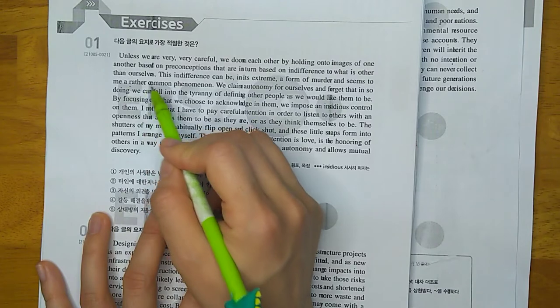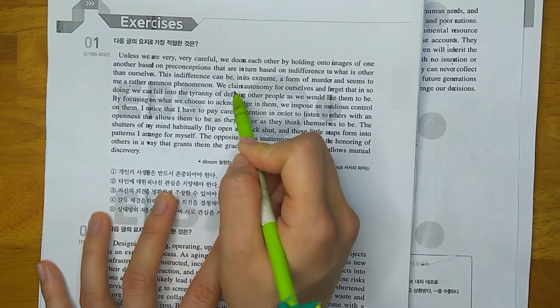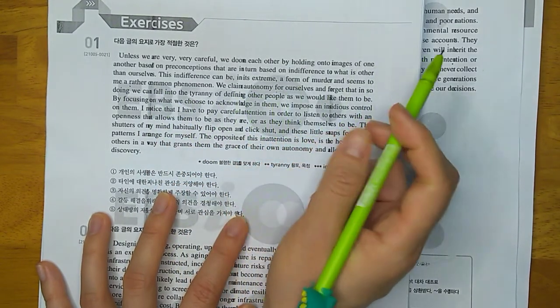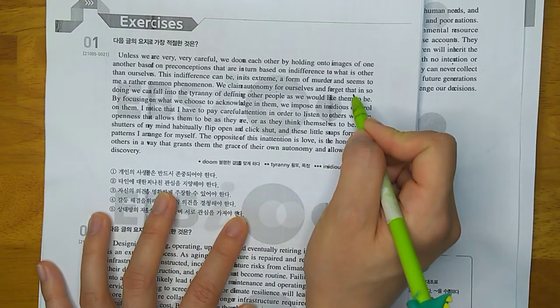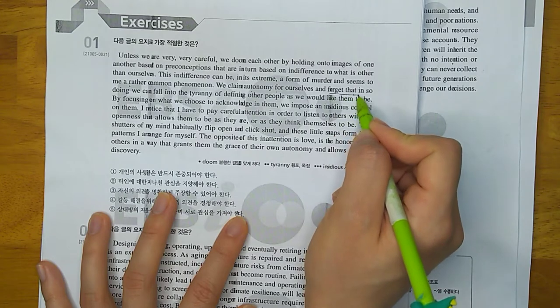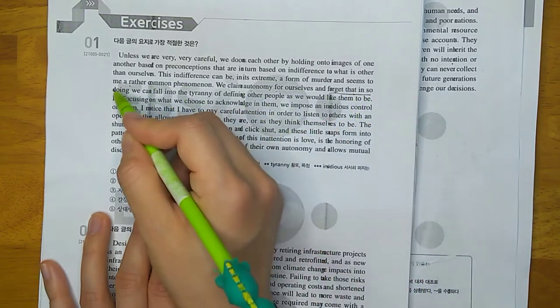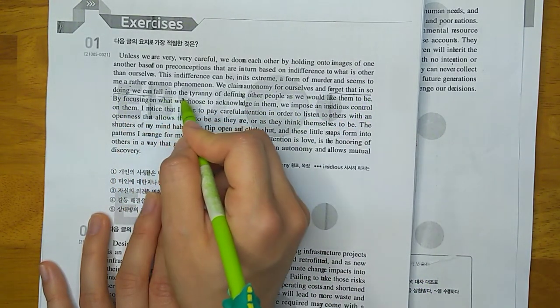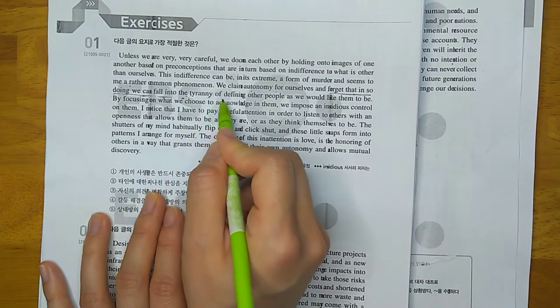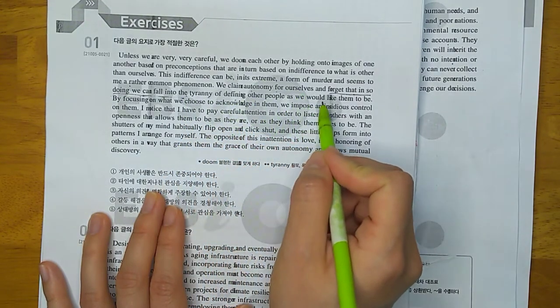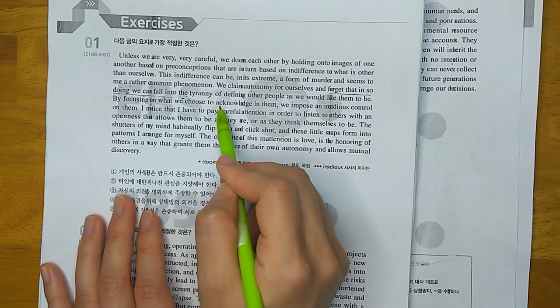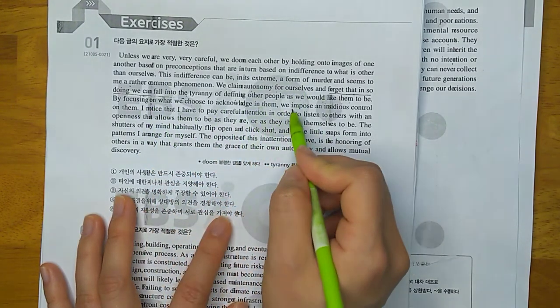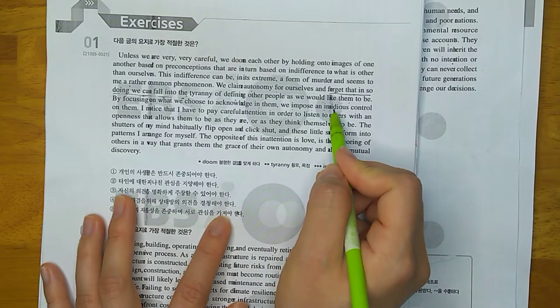We claim autonomy for ourselves and forget that in so doing, we can fall into the tyranny of defining other people as we would like them to be. By focusing on what we choose to acknowledge in them, we impose an insidious control on them.